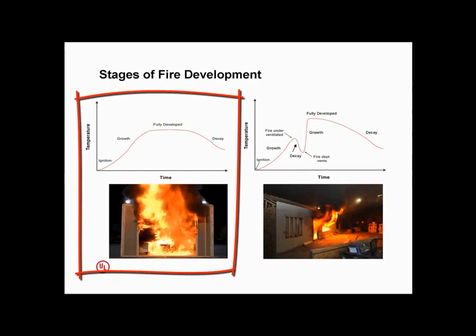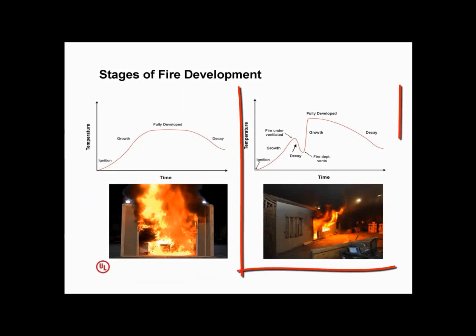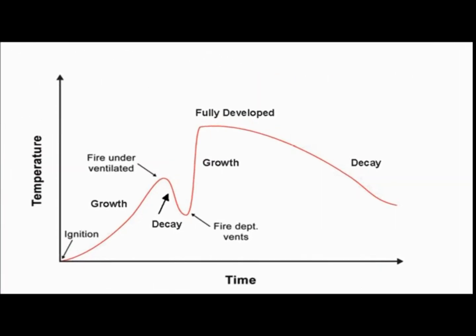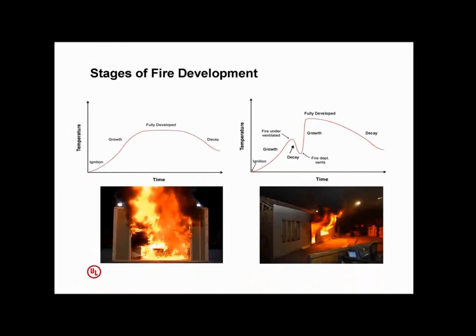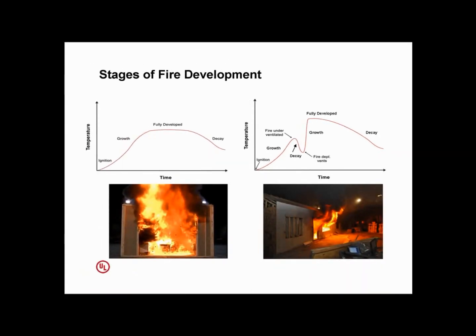If you have a room out in the open, this is what your fire growth curve looks like: ignition, growth, fully developed, decay. But that's not what we're doing in our firefighter training buildings. In a structure, you get growth, then a decay stage, then ventilation, then growth again, then fully developed, then decay. That's what happens when you take this and put it in a structure and ventilate it.